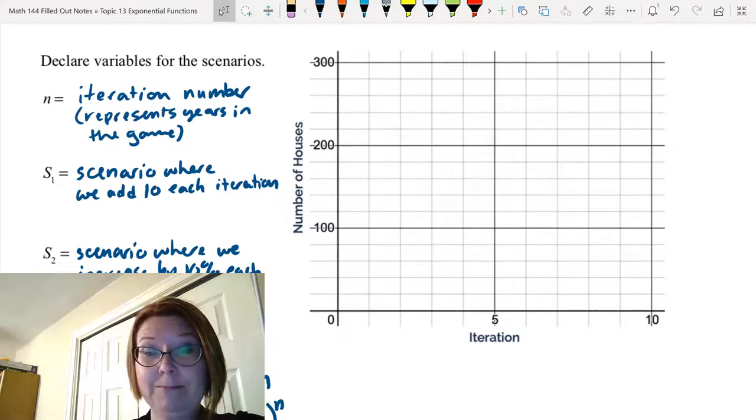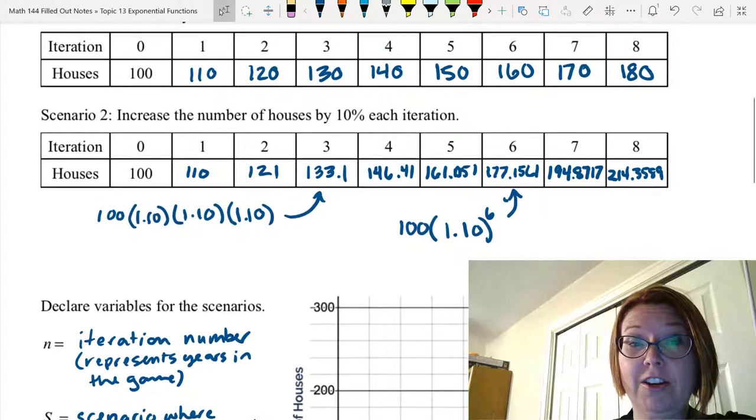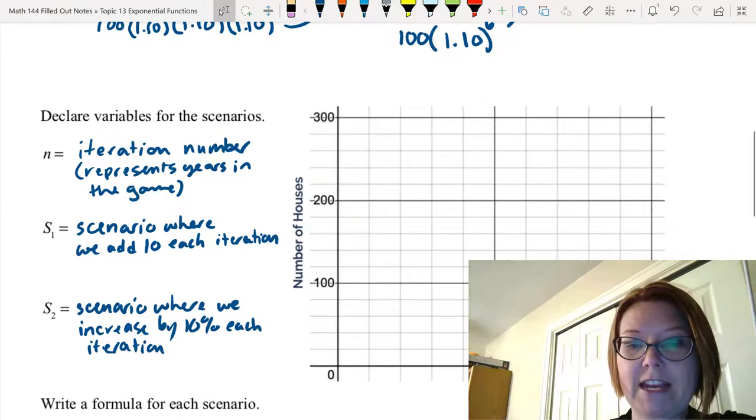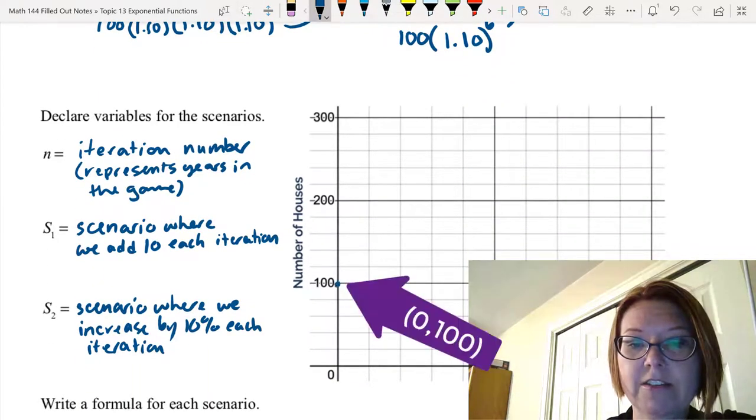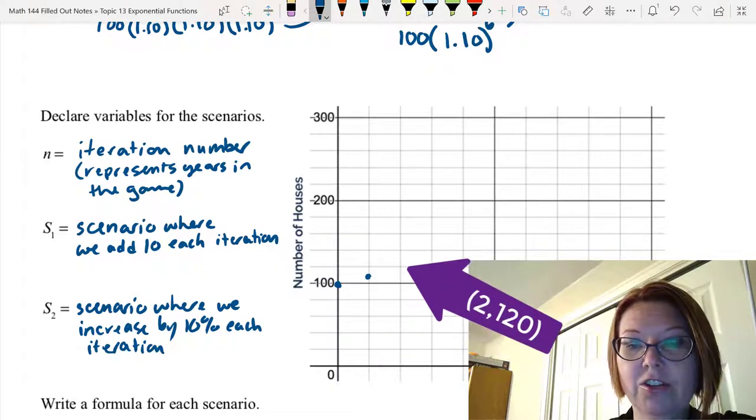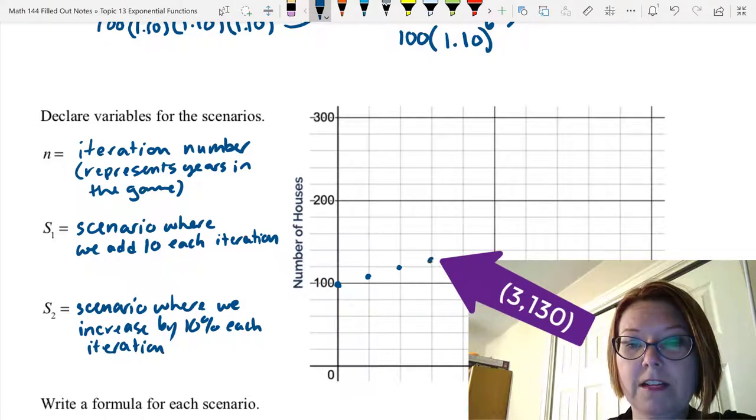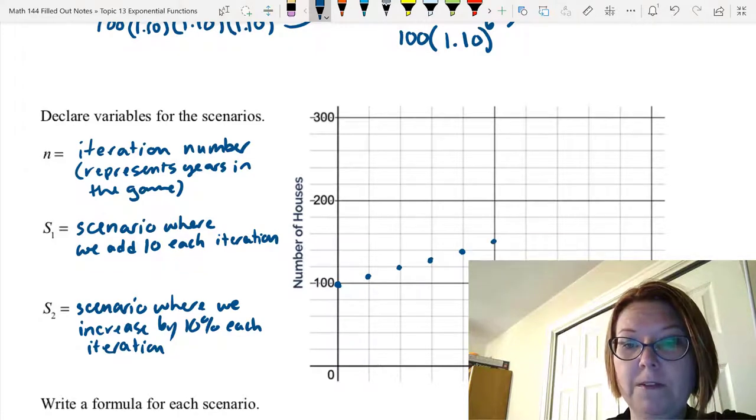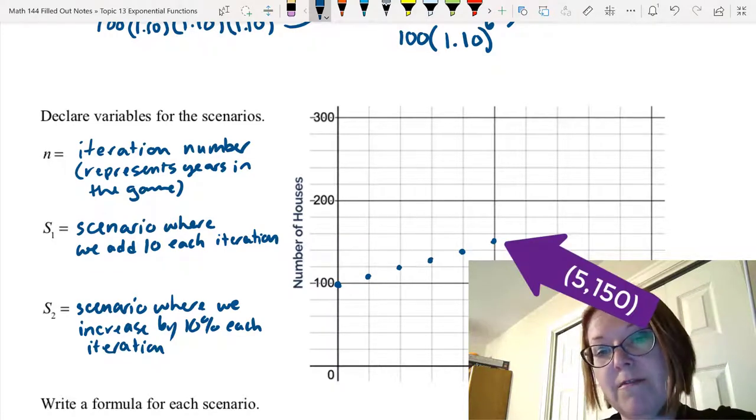Let's take a look at this graph now. For the first scenario we're going to start with 100 and climb up to 180. Iteration 0 is 100, iteration 1 would be 110, iteration 2 would be 120, 3 would be 130, 4 would be 140, 5 would be 150. You can see it's climbing very steadily.